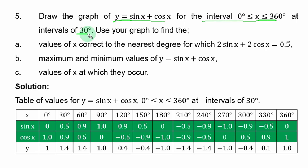Use your graph to find the: a) values of s correct to the nearest degree for which 2 sin s plus 2 cos s equal to 0.5. b) maximum and minimum values of y equal to sin s plus cos s. c) values of s at which they occur, that is, the maximum and minimum values and when they occur, you get the corresponding values of s.